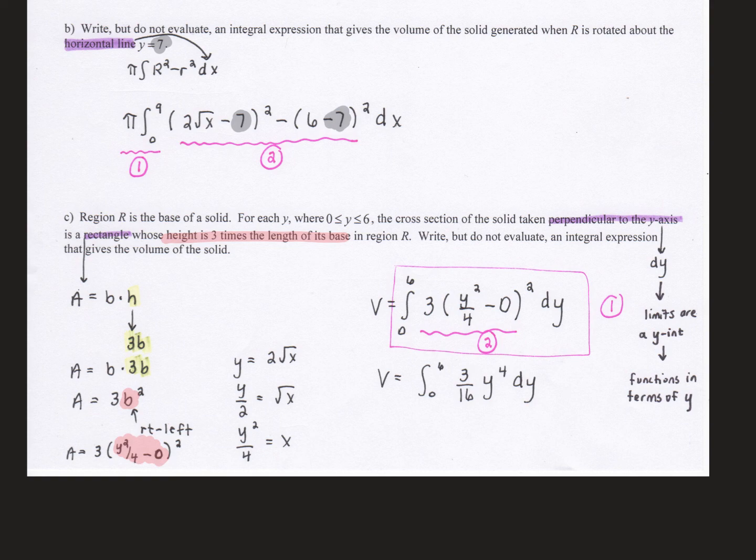And my integral, which is with respect to y, goes from 0 to 6. That's low y to high y of the region. 3, this is my base. And like I said, that minus 0 is optional. So you're going to have an integral, squared, and then a dy at the end. It simplifies to this. You don't actually have to do that simplification.